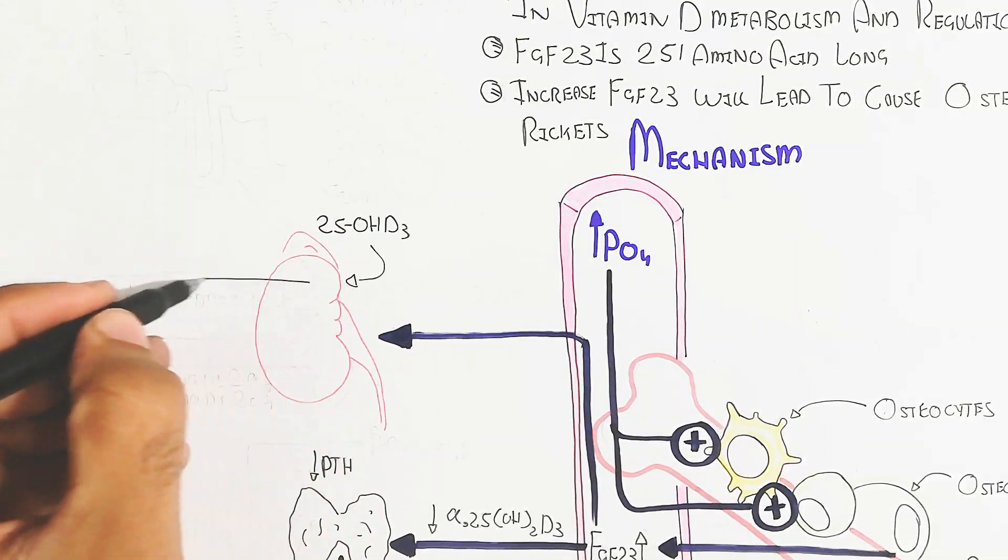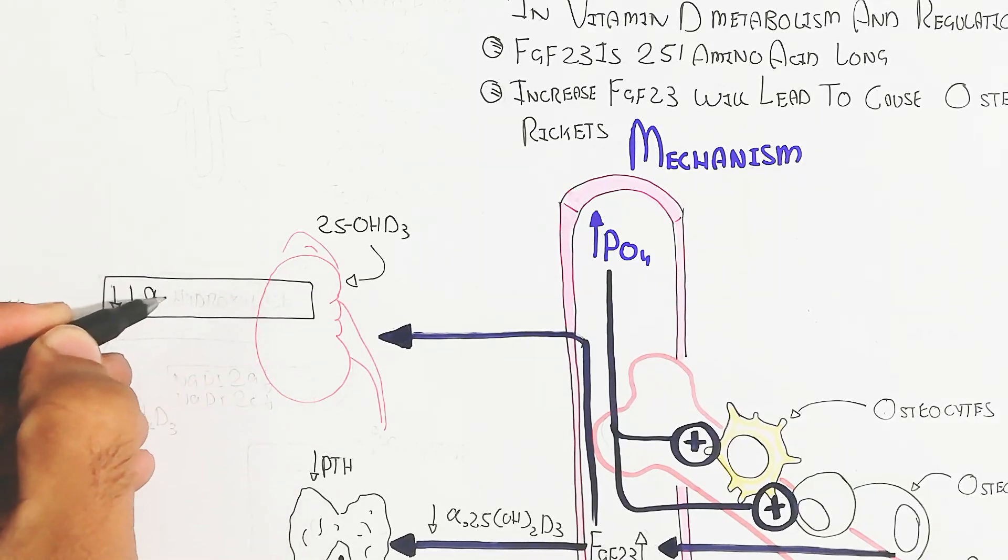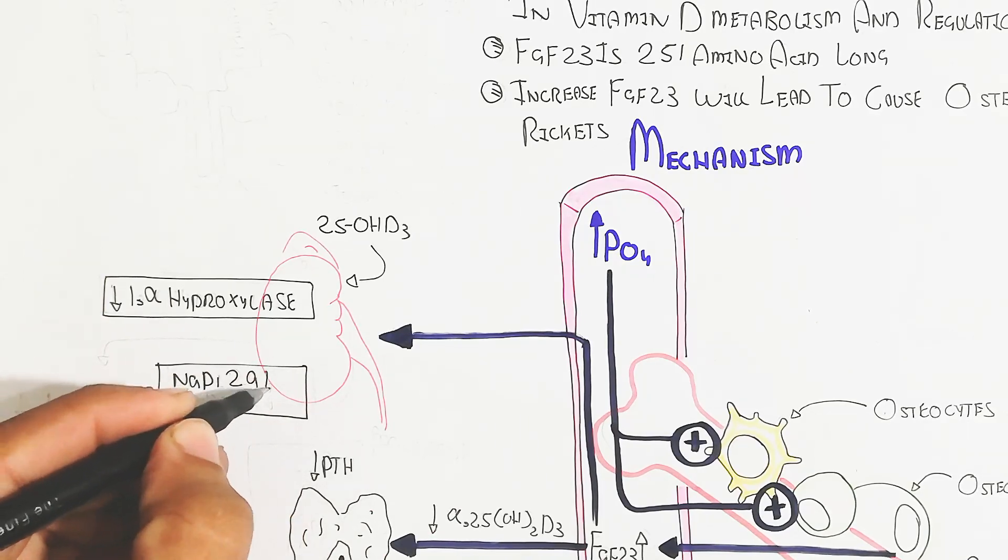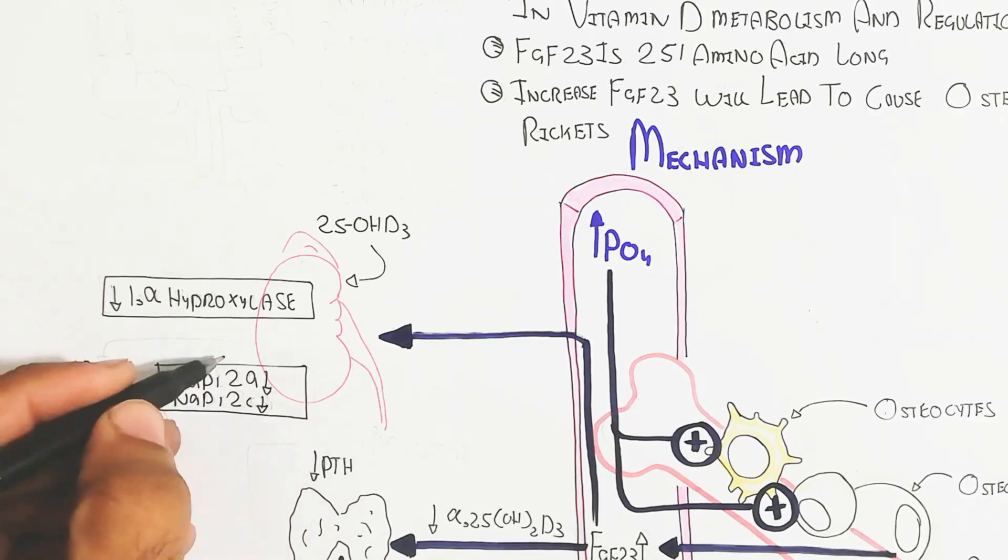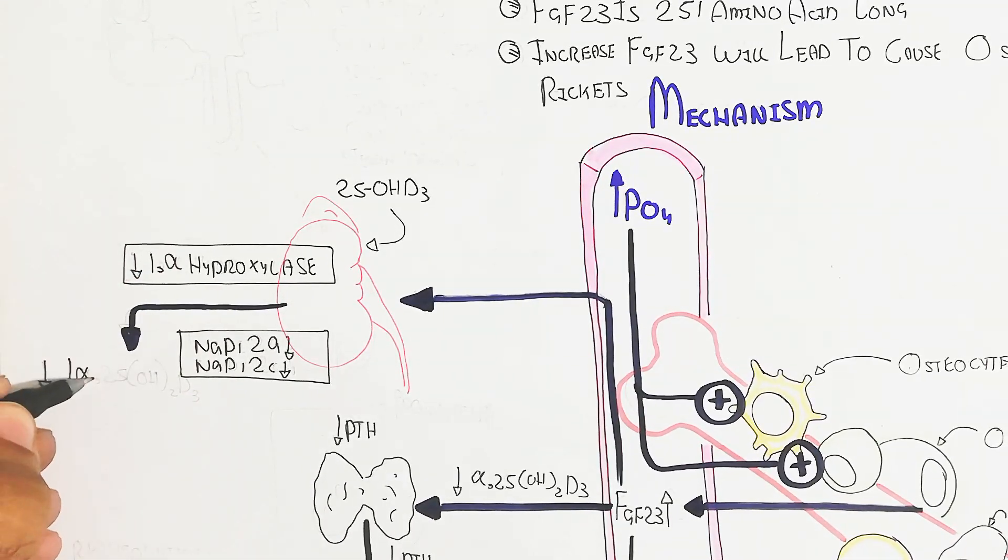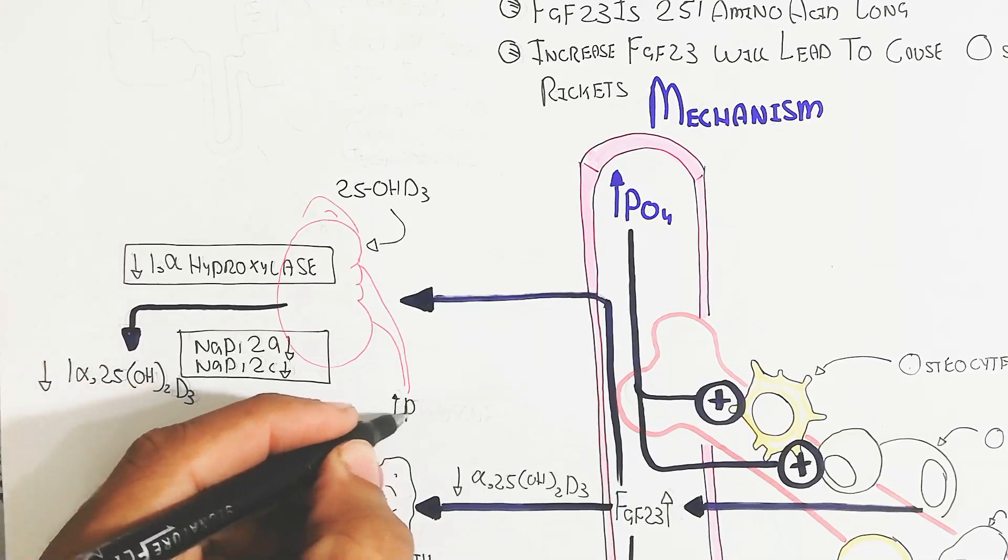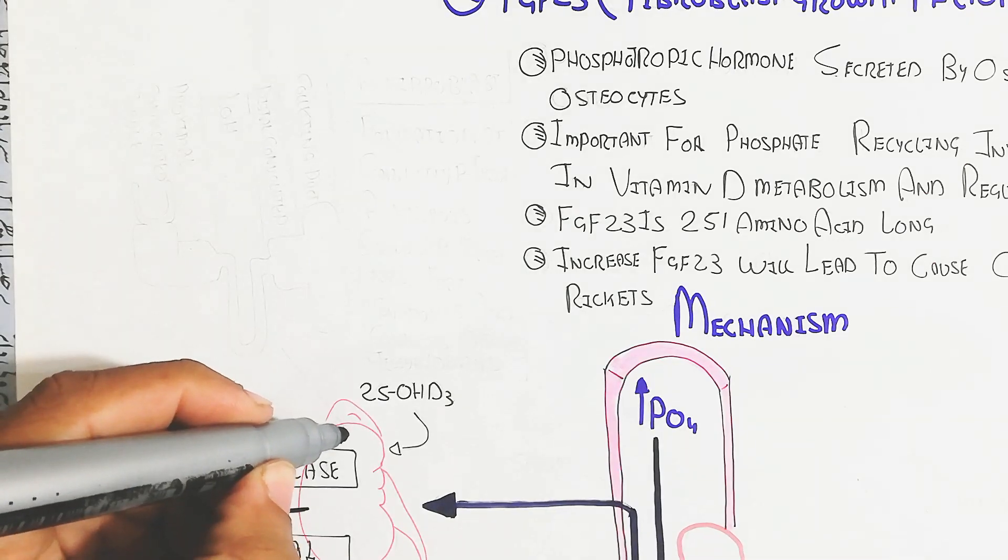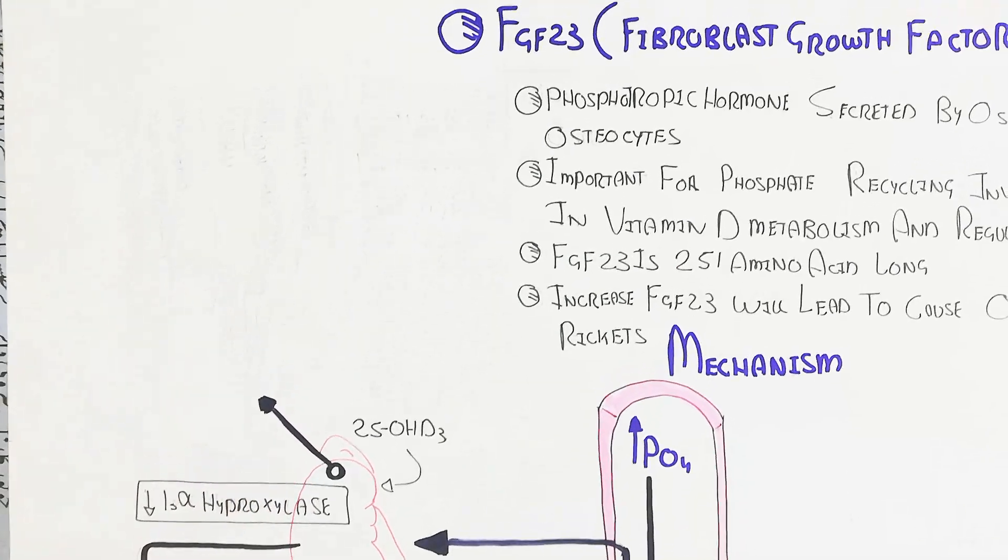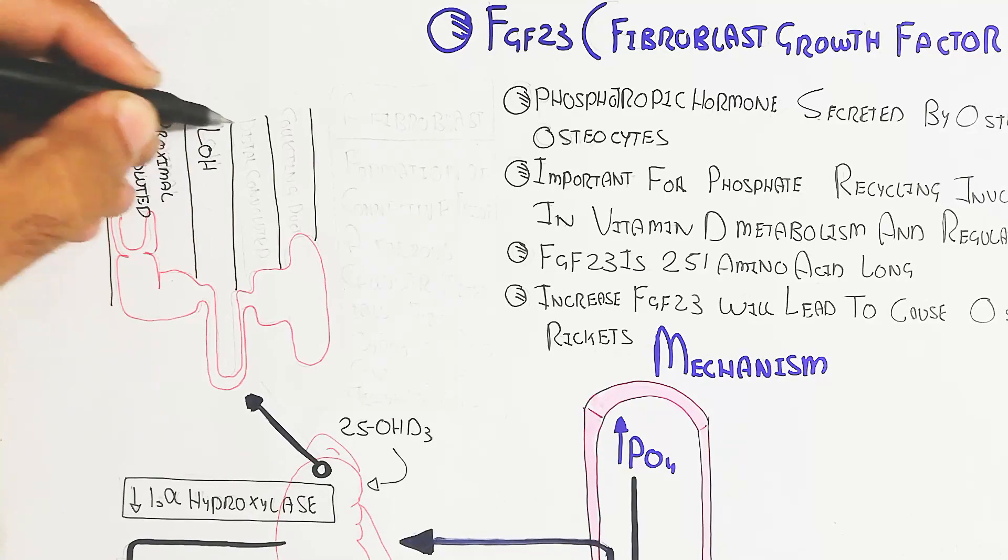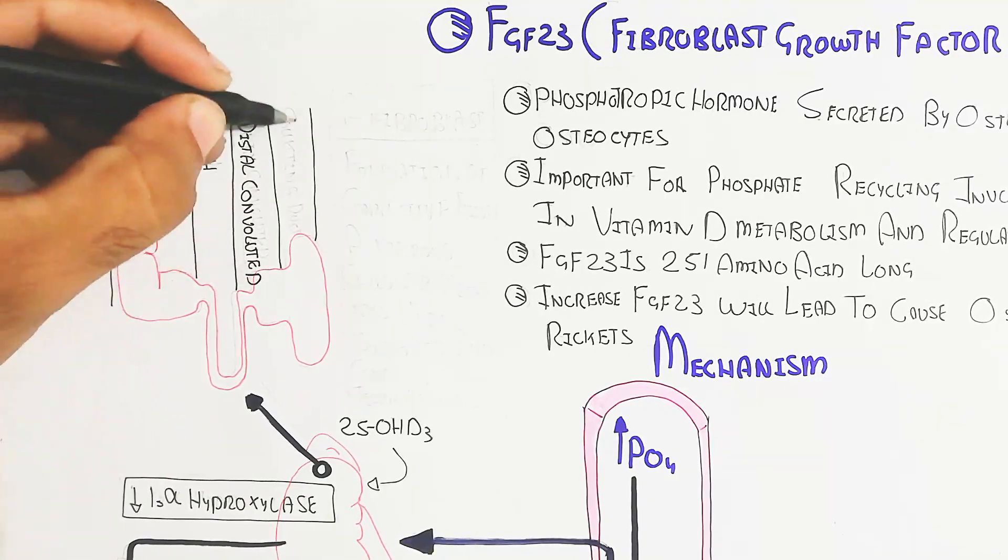FGF23 also targets the kidney, which has the 25-hydroxy vitamin D3 that is able to convert with 1-alpha-hydroxylase enzyme present. The deficiency of this enzyme will lead to decreased sodium phosphate 2 exchange, and in this way the 1-alpha-25-dihydroxy vitamin D3 will decrease. This is the part of the kidney - the nephron is the functional unit of excretion.